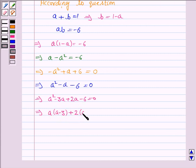Now taking a minus 3 common we have a minus 3 into a plus 2 is equal to 0. And this implies a is equal to 3 or a is equal to minus 2.